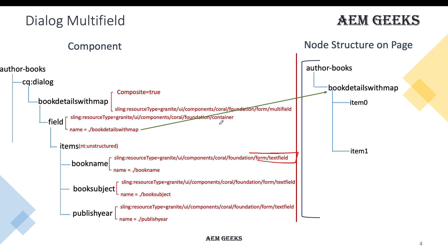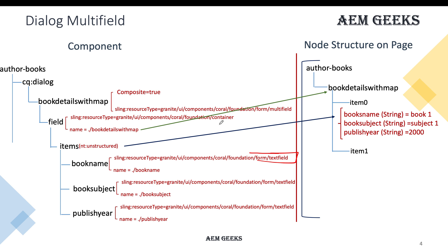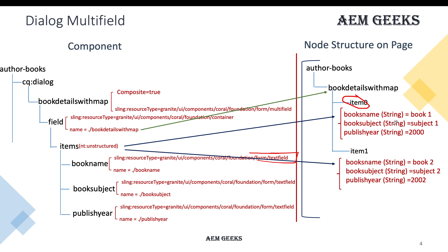Since I have more than one field, I keep composite equal to true. When you drag and drop this component and add two iterations, it creates a multifield node named after the name property. Under it, two child nodes are created — one per iteration — each holding the three property values (book name, subject, publish year) for that iteration.